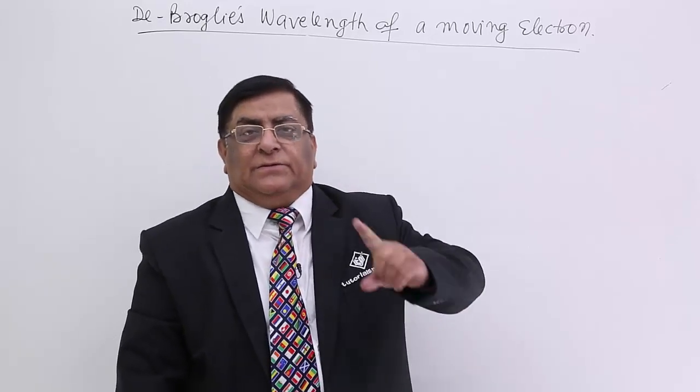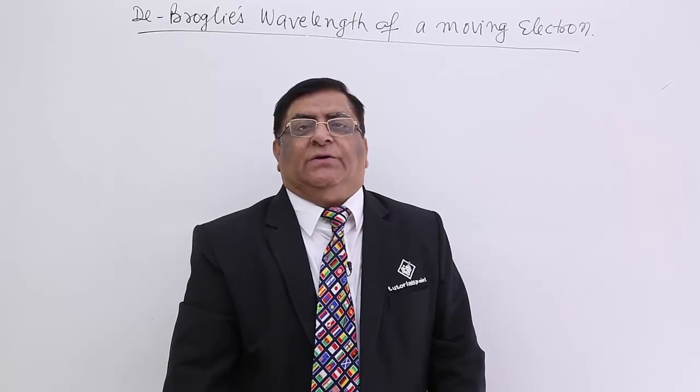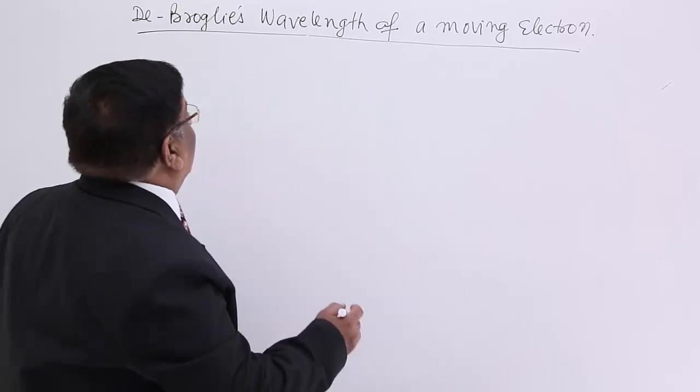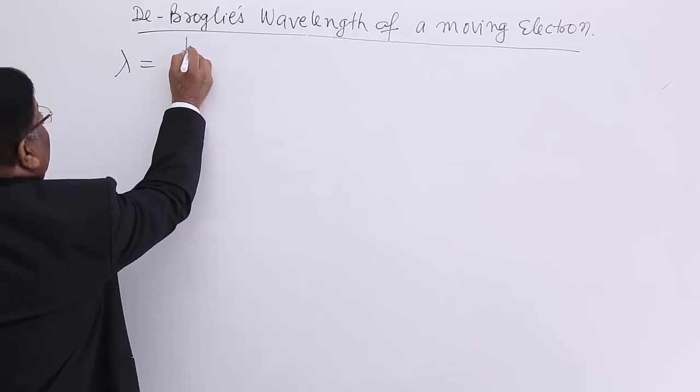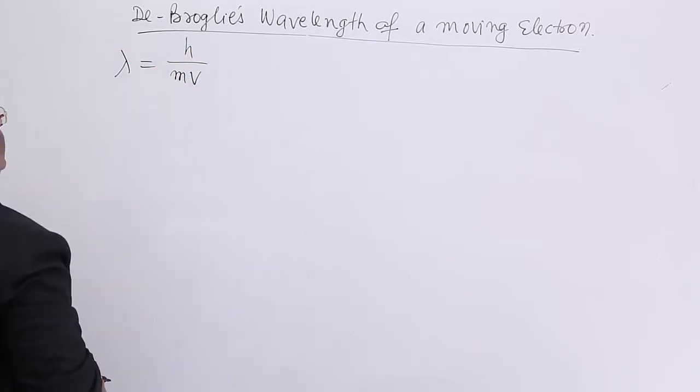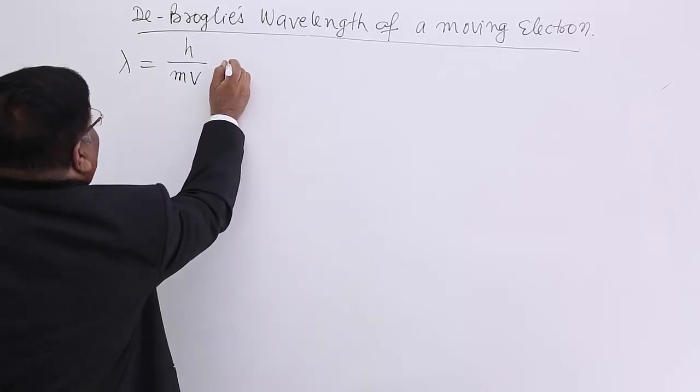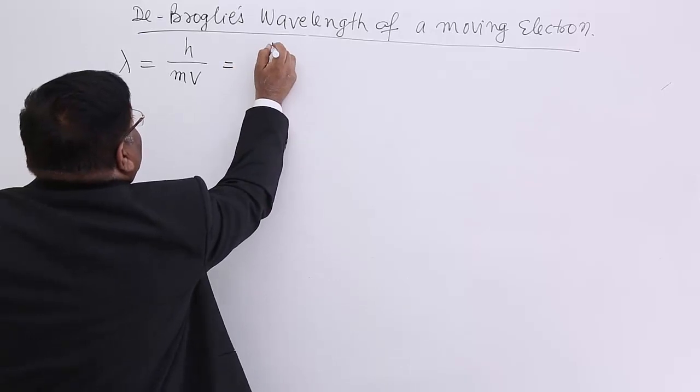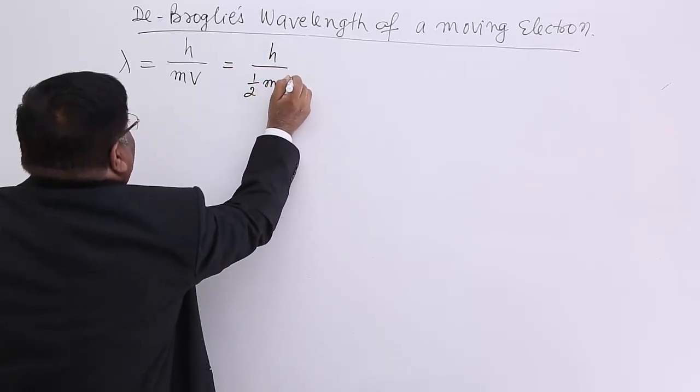Taking all these things into consideration, we start with De Broglie's equation: λ for a material is equal to h/mv. Wavelength for a material is h/mv, and this he converted as h/√(½mv²), which is kinetic energy. To balance it,